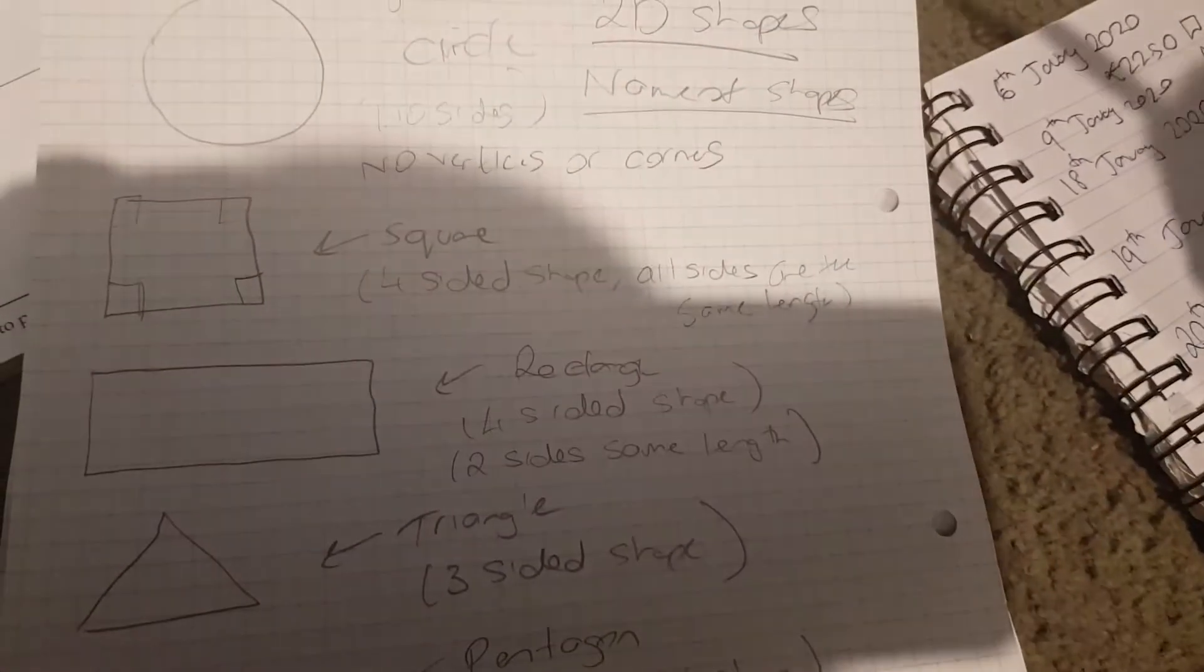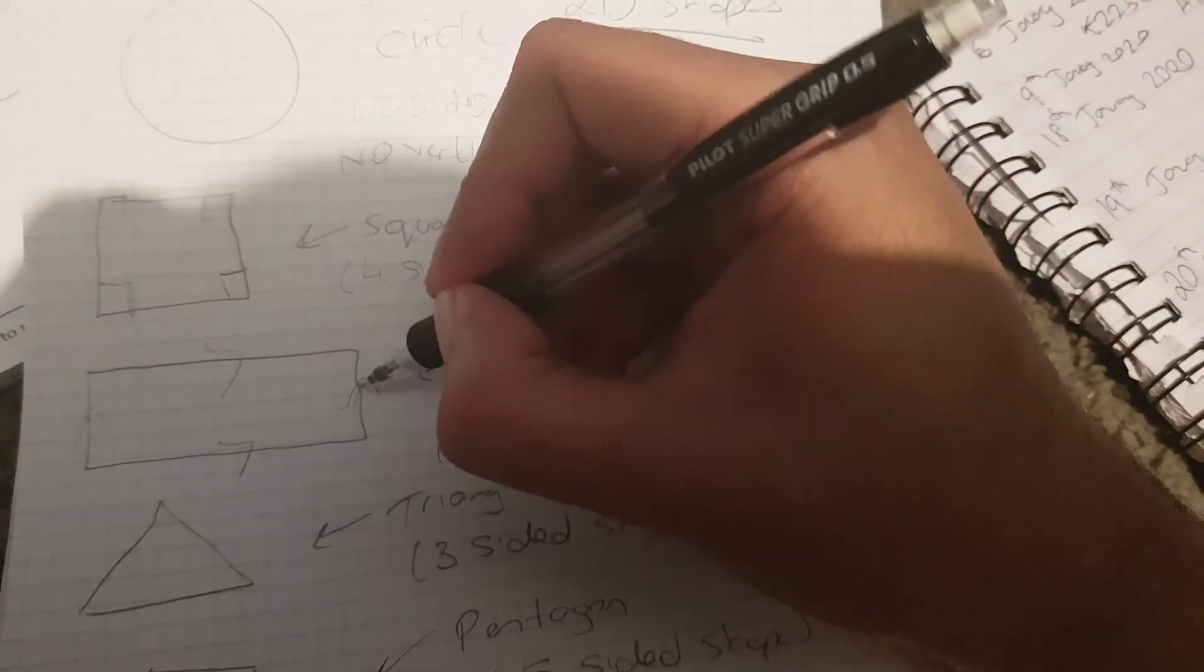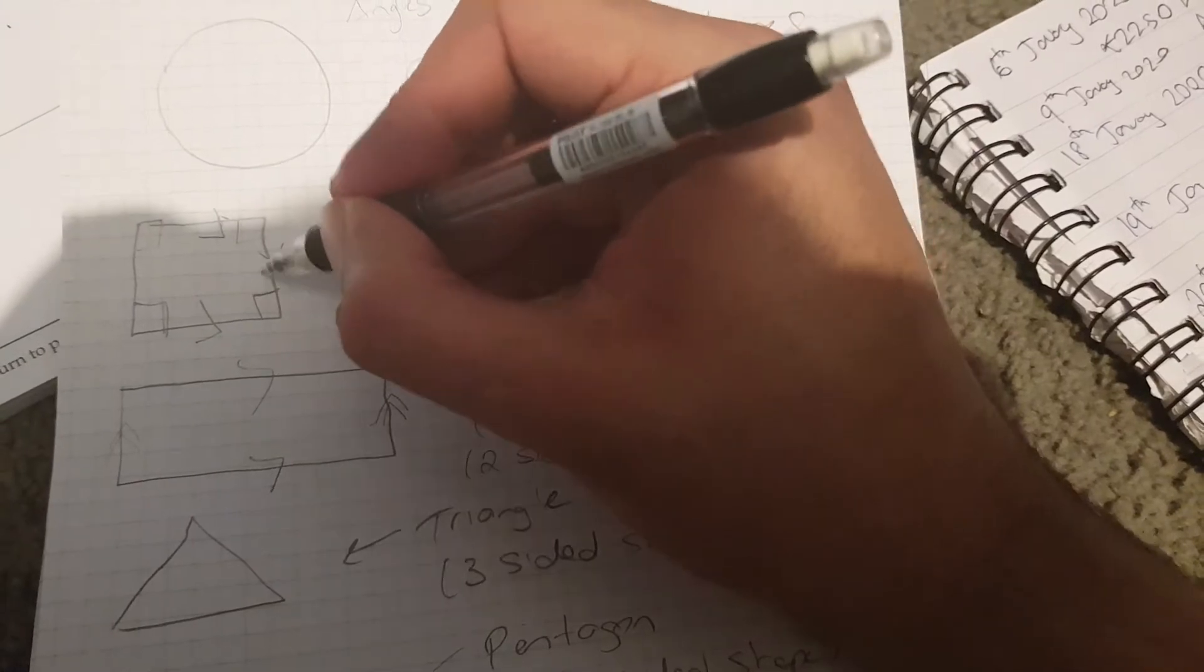The next one, rectangle. So a four-sided shape, two-sided length. So this side and this side are actually the same, and this side and this side are actually the same. So essentially, these two sides are actually parallel, and so are these sides. This one's parallel to this, and vice versa, and this is parallel to this.